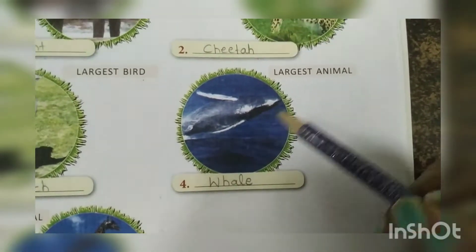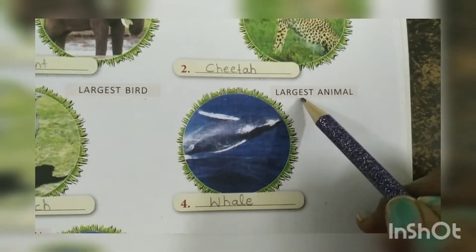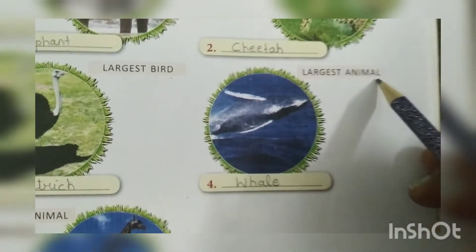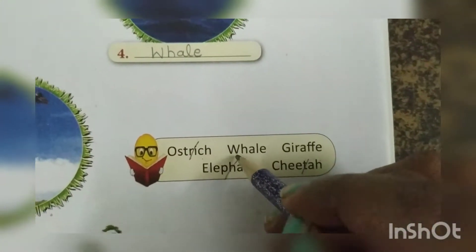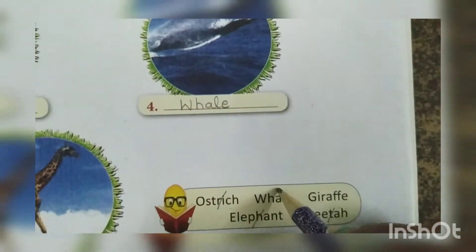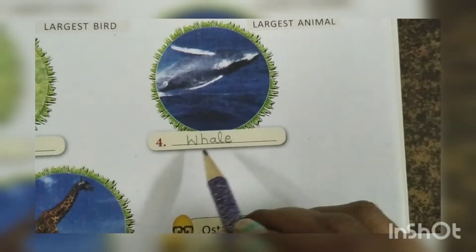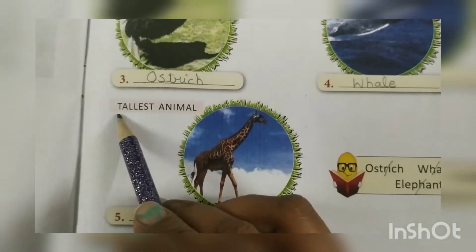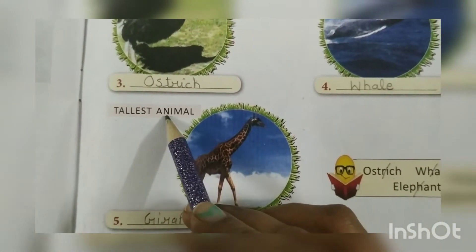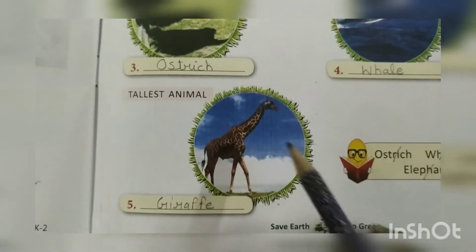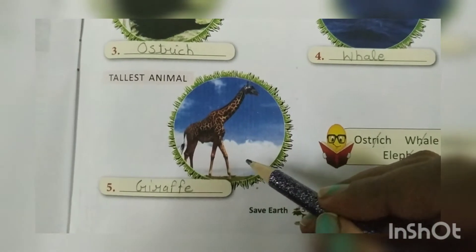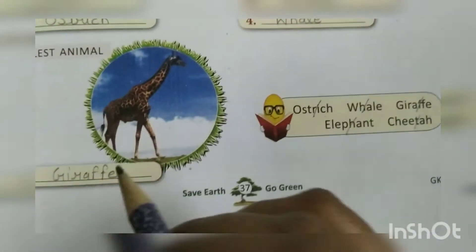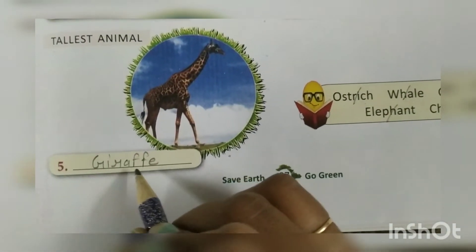Now, fourth number: largest animal, L-A-R-G-E-S-T, A-N-I-M-A-L. Largest animal — ye konsa picture hai? Whale, W-H-A-L-E. Fifth picture: tallest animal, T-A-L-L-E-S-T, A-N-I-M-A-L. Tallest animal — konsa hai? Giraffe. So G-I-R-A-F-F-E, giraffe. Write here G-I-R-A-F-F-E, giraffe. Okay?